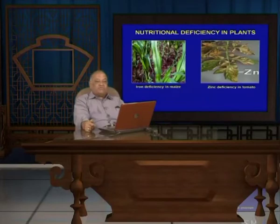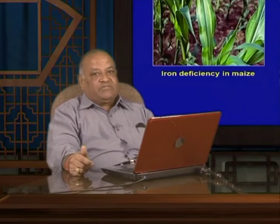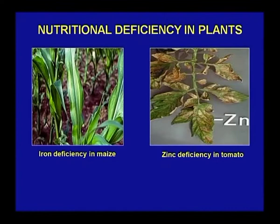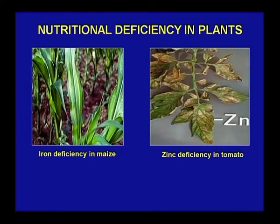Third are nutritional deficiencies in plants. So many nutritional deficiencies like zinc deficiency, iron deficiency, and magnesium deficiency cause lots of problems in crop plants, and actually reduce the crop through shortcomings of trace elements. Iron deficiency in maize is shown here, and zinc deficiency in tomato is also seen with prominence.